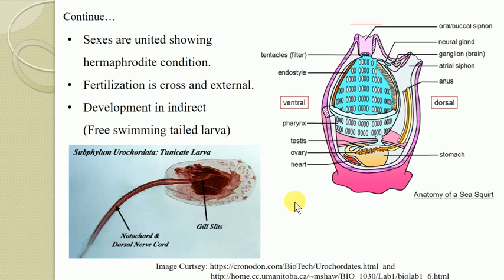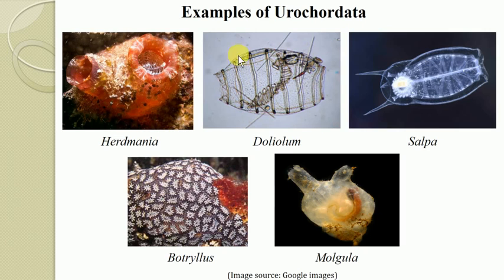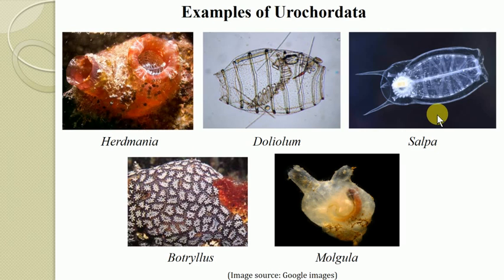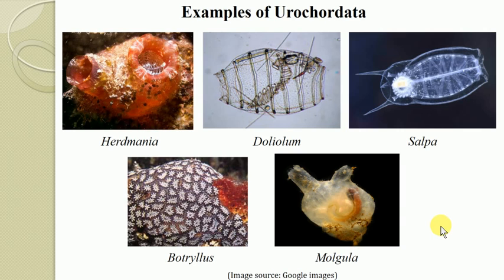These are the salient features of subphylum Urochordata. The examples of Urochordates include: Herdmania, Doliolum, Salpa — of which Herdmania is the fixed form while Doliolum and Salpa are pelagic or free-swimming forms. Botryllus and Molgula are also examples — Botryllus is sedentary and Molgula is a free-living or pelagic form.